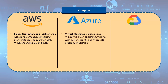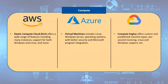Azure's Virtual Machines is Microsoft Azure's core cloud-based compute solution. It includes Linux, Windows Server, and other operating systems, as well as better security and Microsoft program integration. In comparison to its competitors, Google's computing services catalog is somewhat smaller. Compute Engine, the company's principal service, offers custom and predefined machine types, per-second invoicing, Linux and Windows support, and carbon-neutral infrastructure that uses half the energy of traditional data centers.